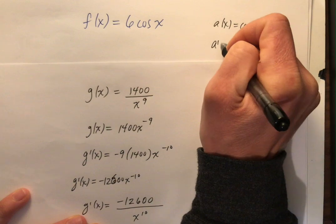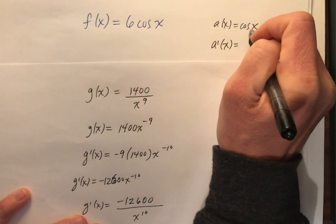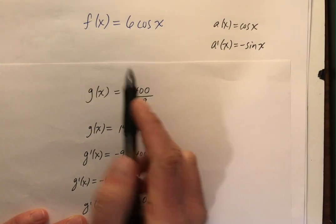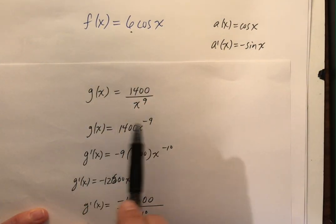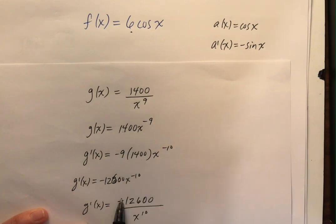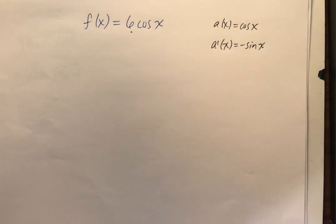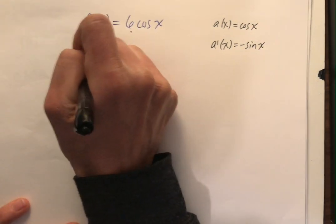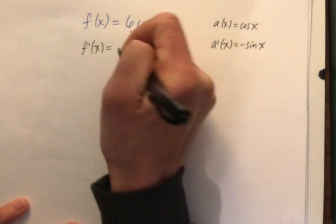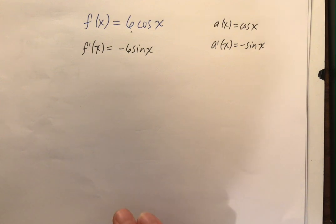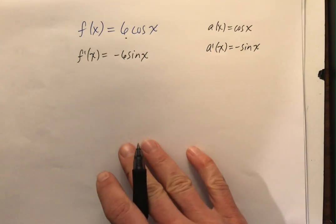So what I mean by that, like let's say a of x is cosine x. Based on that geometric or graphical proof, we said that if cosine x is our function, then the derivative is negative sine x. So this time I've got a 6 here, and just like in the g of x function, when the 1400 just came along for the ride, the 6 is there, it's going to come along for the ride. So I get negative 6 sine x. Awesome.